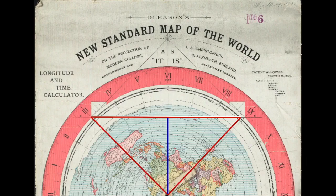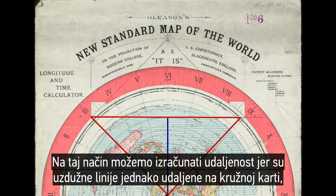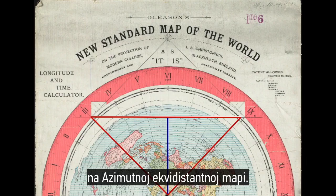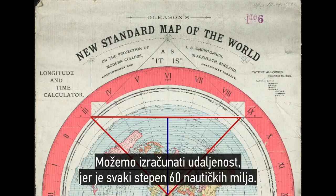And by doing that, we can calculate the distance because longitudinal lines are equidistant on a circle map and as a method equidistant map. We can calculate the distance because every degree is 60 nautical miles.